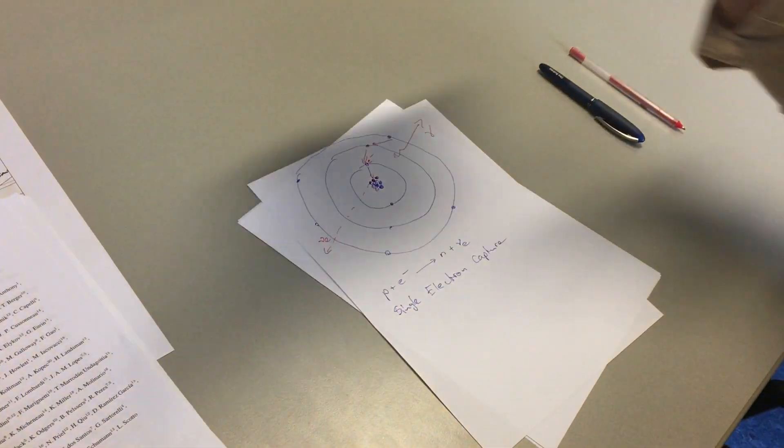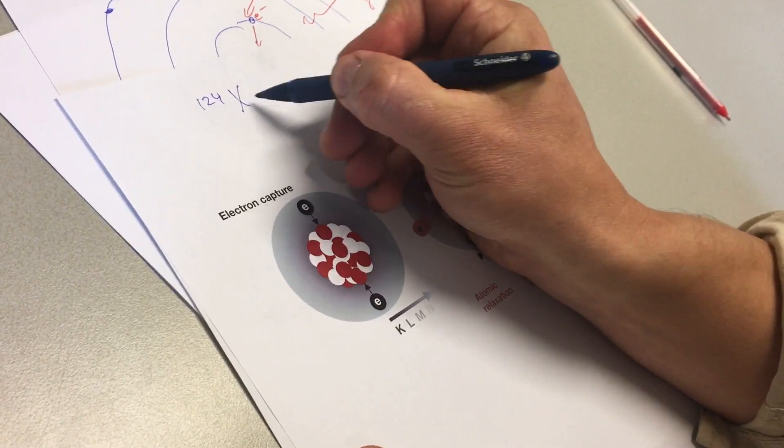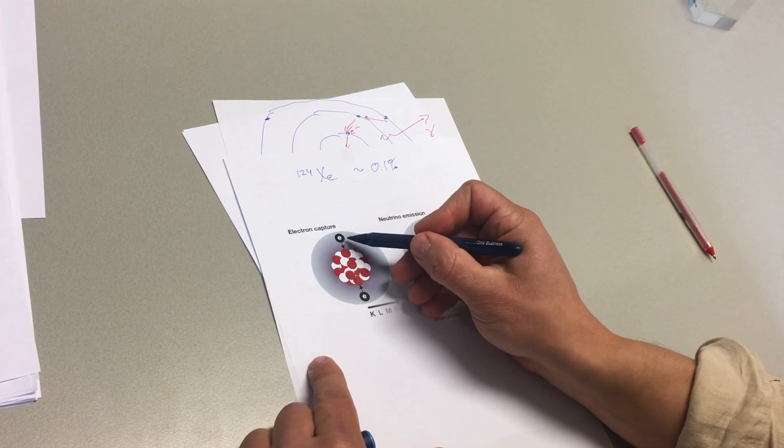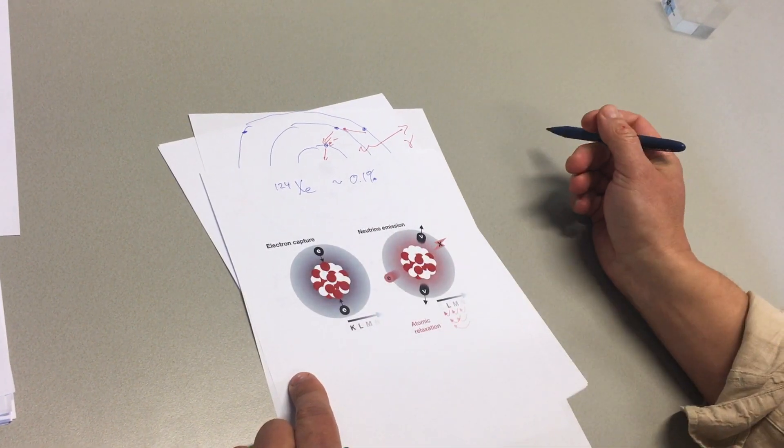Electron captures can happen simultaneously, and one such nucleus where this can happen is xenon-124. It's a special isotope of xenon, and what happens there is that occasionally two electrons from the inner shell get captured by the xenon nucleus.